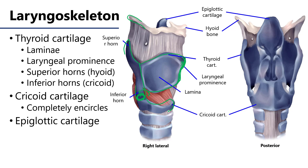The cricoid cartilage is the only element of the laryngoskeleton which is complete 360 degrees about the airway. It forms a base upon which the arytenoid cartilages sit. The epiglottic cartilage articulates with the thyroid cartilage, and along with the arytenoid cartilage, helps form the laryngeal inlet.